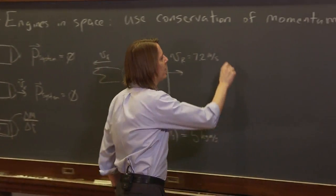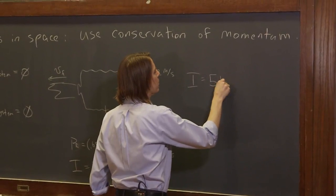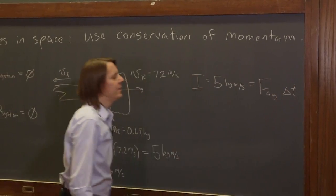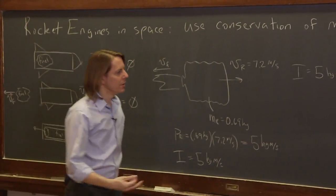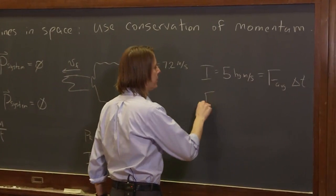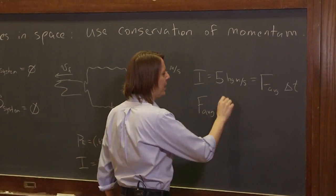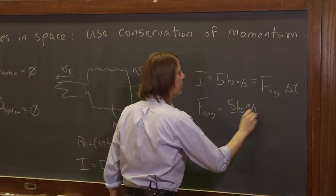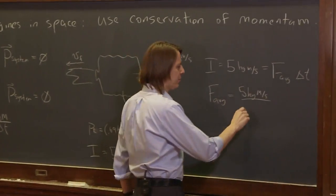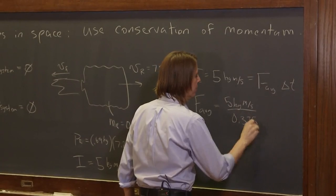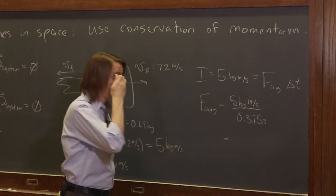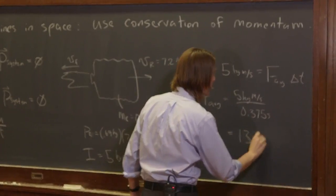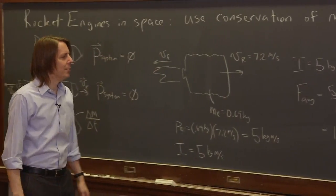Since we have the impulse, we could say I equals 5 kilogram meters per second, which equals the average force times delta T. So also from the video, I was able to get approximately what delta T was just by watching the frames. And it was about 0.375, while the fuel was coming out and really pushing. So from that, we can get the average force of the thrust on the rocket. It was about 13 newtons. So not huge, but enough to really get it going.